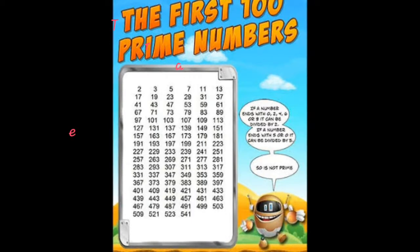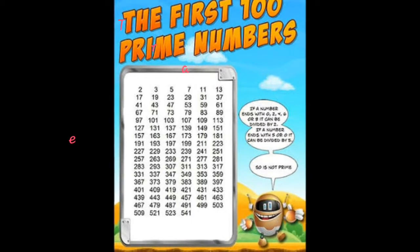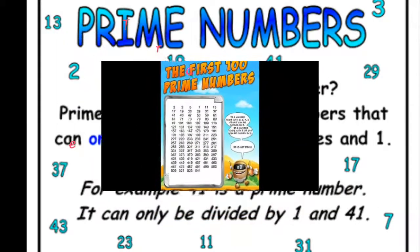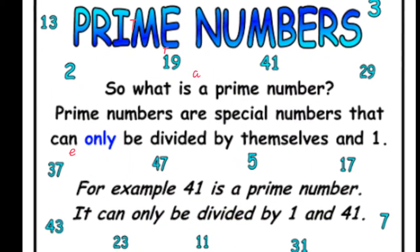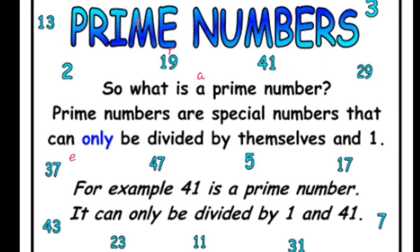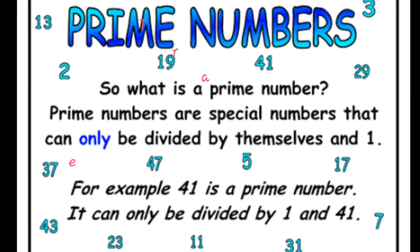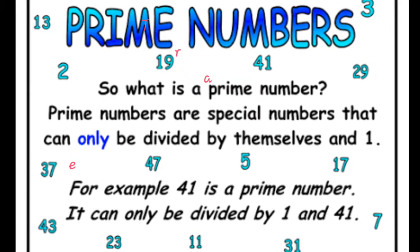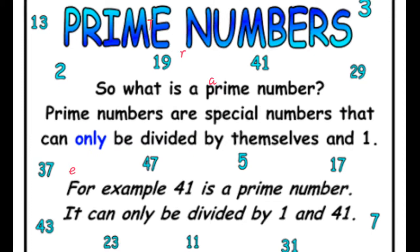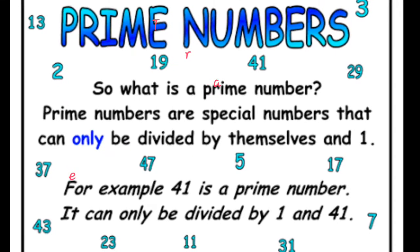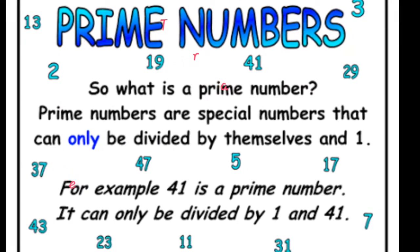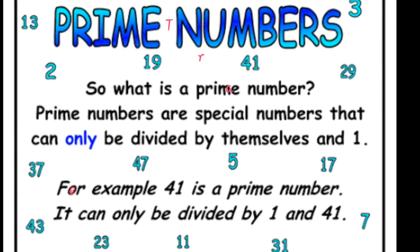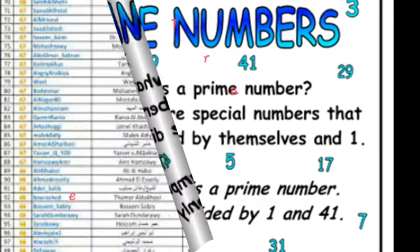Other methods and helpful hints for determining prime numbers: although it is not recommended to use until a student grasps the core concepts of prime numbers, the prime number calculator is a quick and easy method to determine if a number is prime or not, as are prime factorization trees, which is a method similar to factorization.